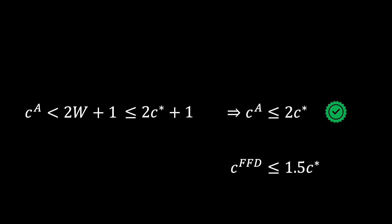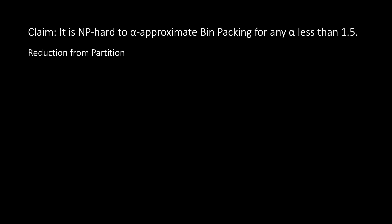But can we do better than 3 over 2? No. We prove this now. We prove that it is NP-hard to approximate bin packing to any constant less than 1.5. We prove this by a reduction from partition, a well-known NP-hard problem.